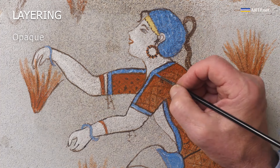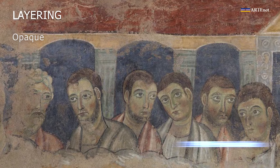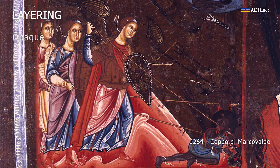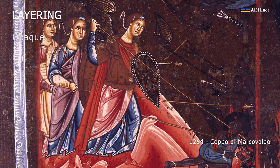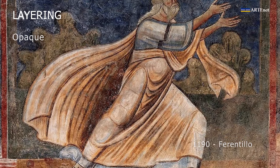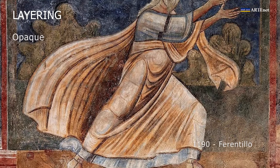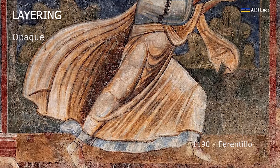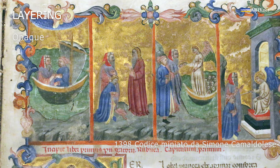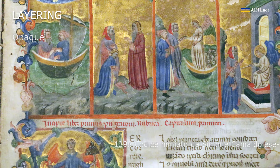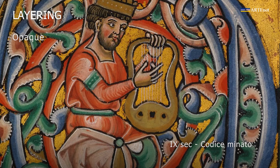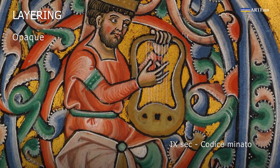From the 11th century, in frescoes as well as in panels, we can see in the drapery of the figures simulations — although simplified — of the modelling through the adoption of a procedure already in use in miniatures and described in numerous treatises of the time. Known as terni di colore. Let's take a closer look at this method.